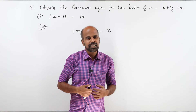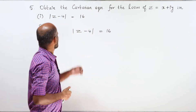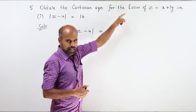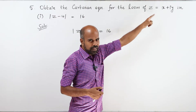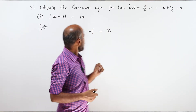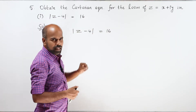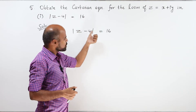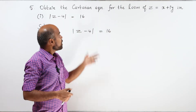Hello students, let us see the fifth question. Obtain the Cartesian equation for the locus of z equal to x plus iy. The first condition is: modulus of z minus 4 equal to 16.